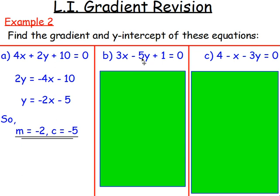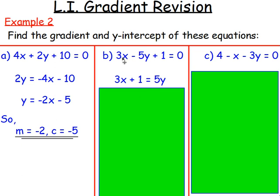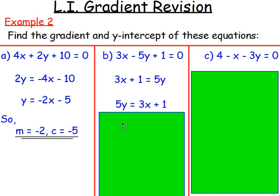For example b: 3x take away 5y plus 1 equals 0. Again, we want it in the form y equals. If I move the 5y to the other side — add 5y to both sides — I'd have 3x plus 1 on the left, and 5y would be on the right and positive. Writing it back to front gives me 5y equals 3x plus 1.